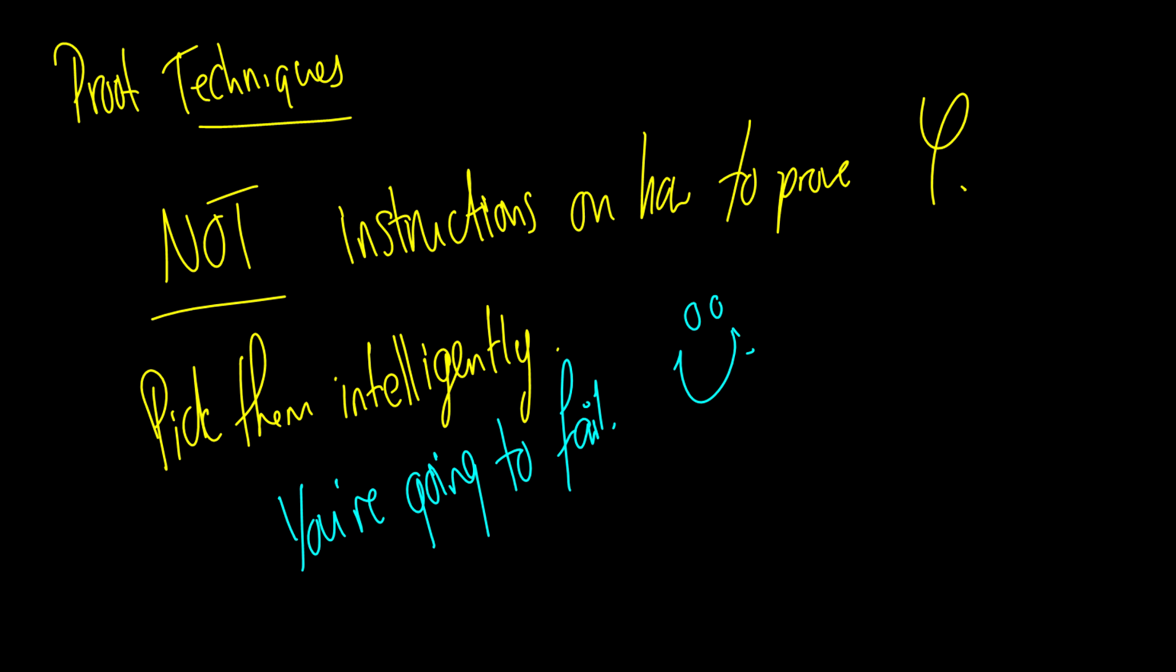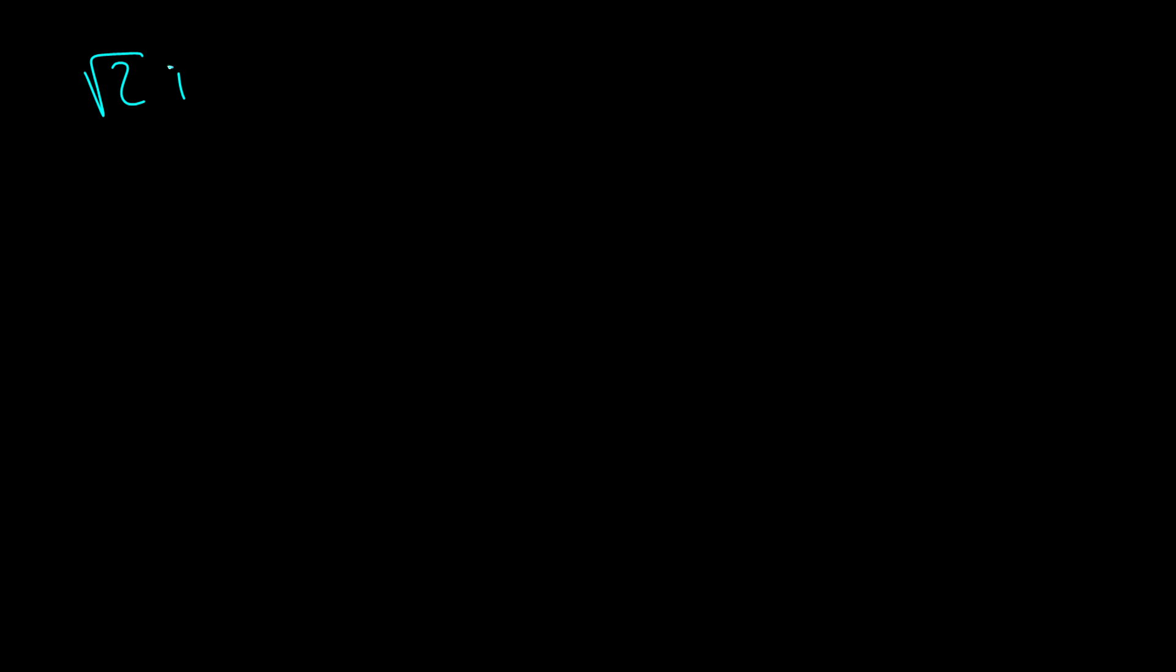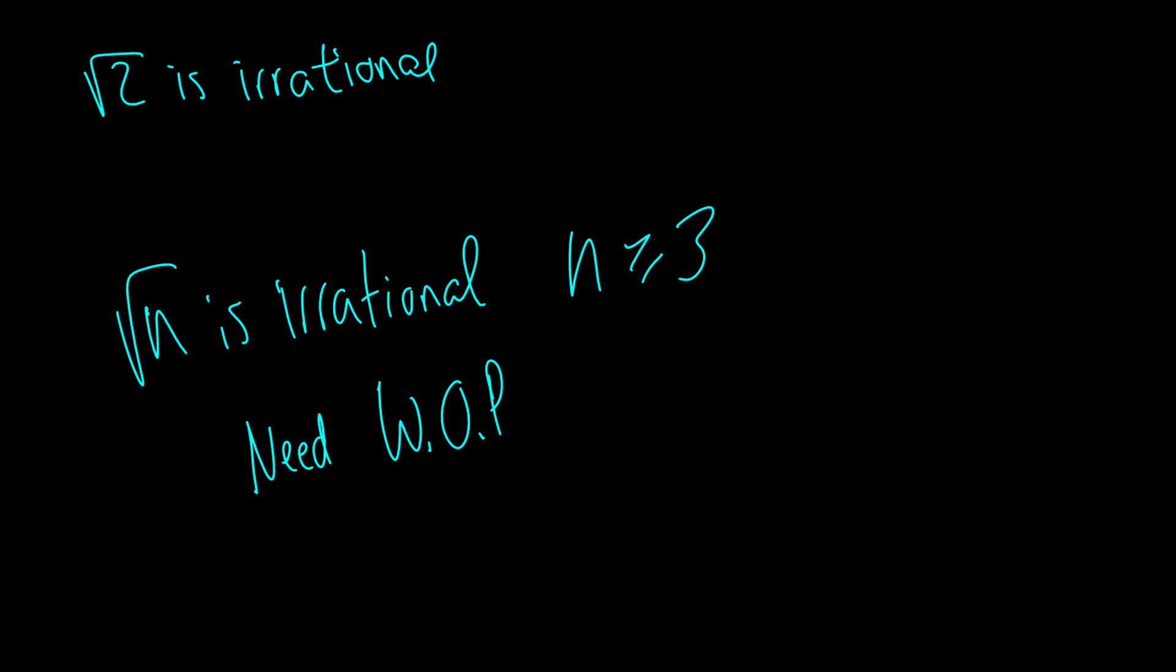Straight up, I'm going to tell you that this proof for √2 is irrational. The proof I gave you does not work, and it does not work for √n is irrational for any n greater than or equal to 3. It does not work. If I were to say prove √3 is rational, the proof I gave you for √2 will not work for √3. In fact, what you need is the well-ordering principle. And that will work for proving √3, √5, √7, √11, √13, √17, √19, √23, √29, and so on and so forth.